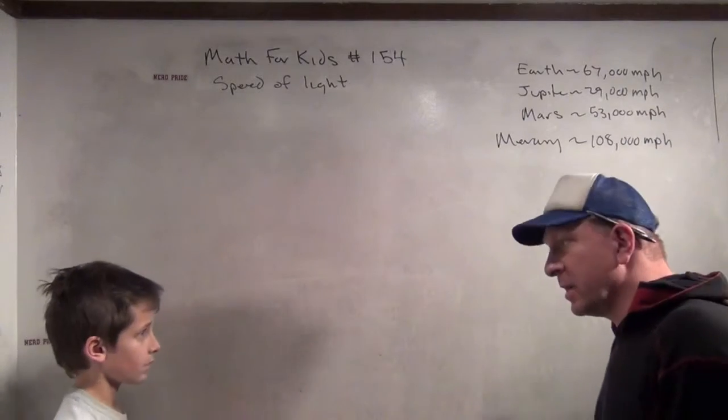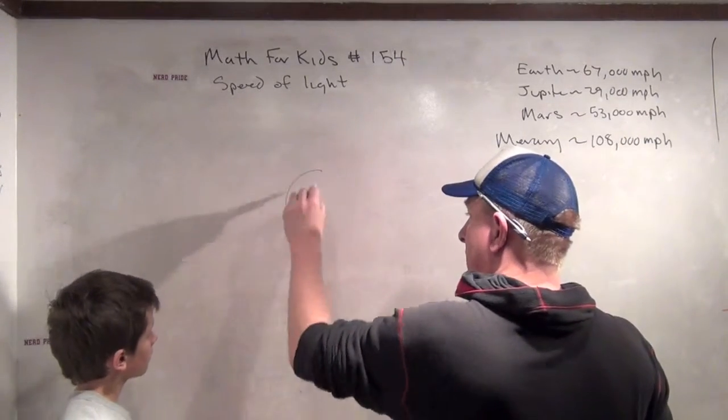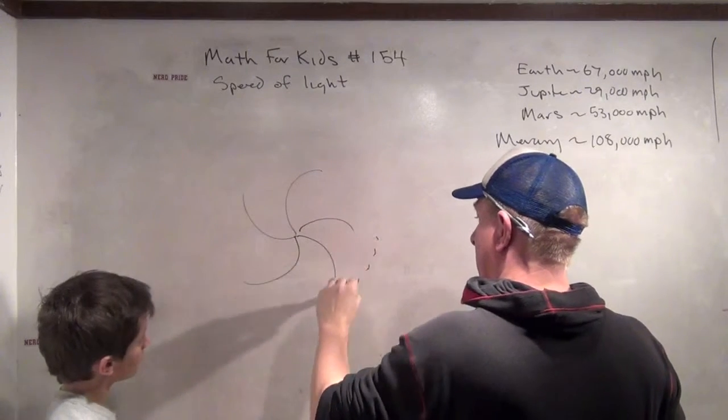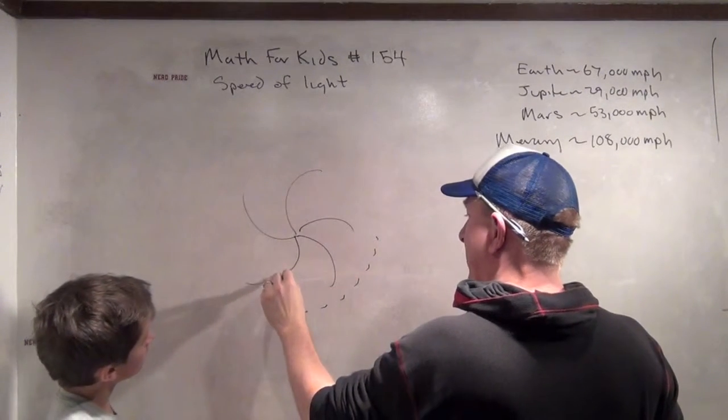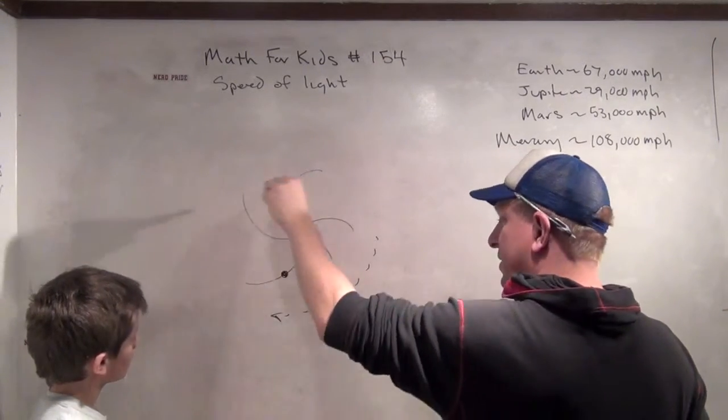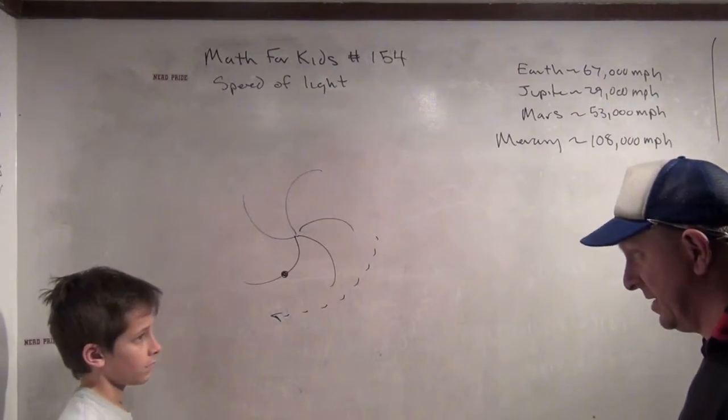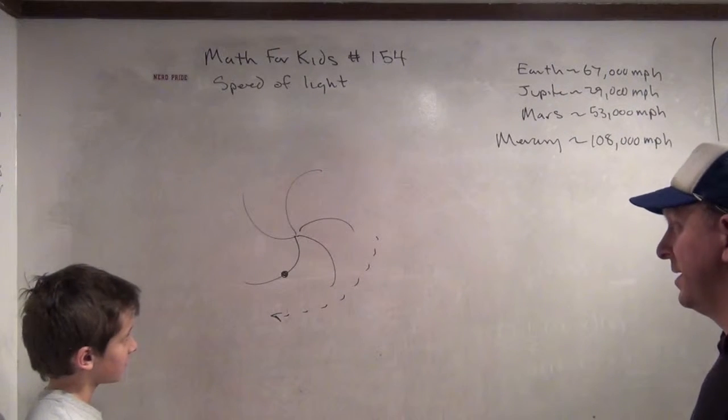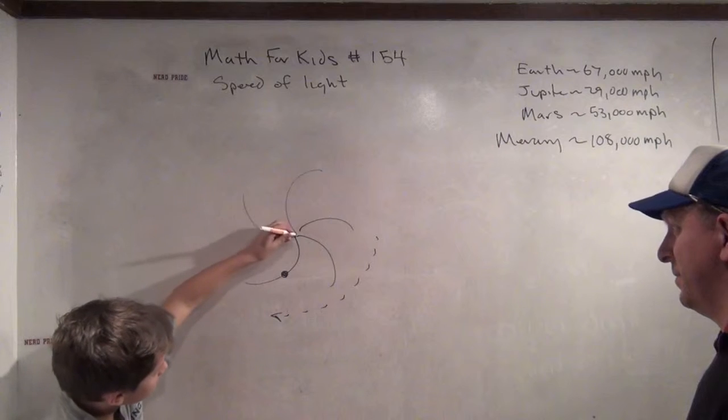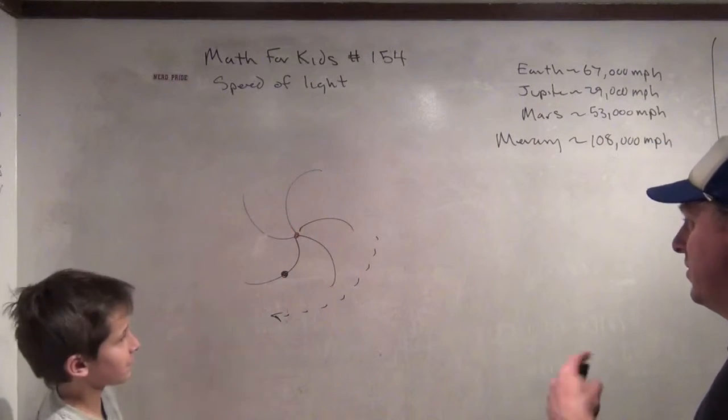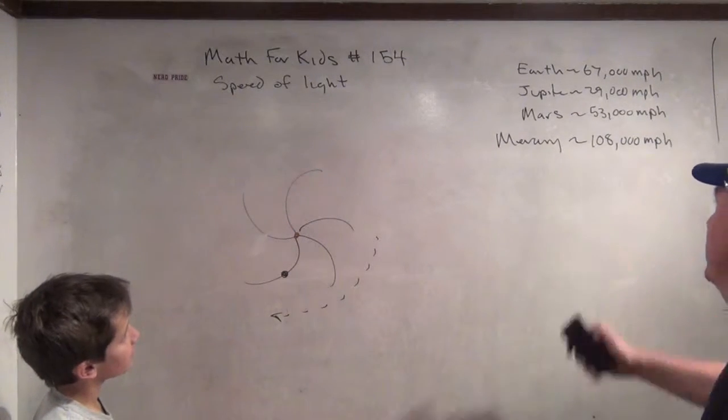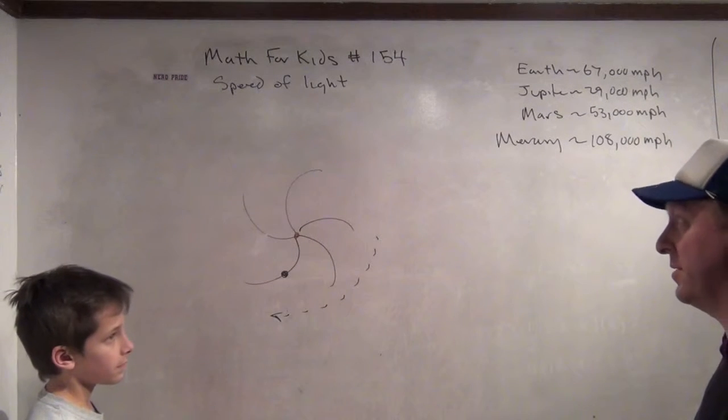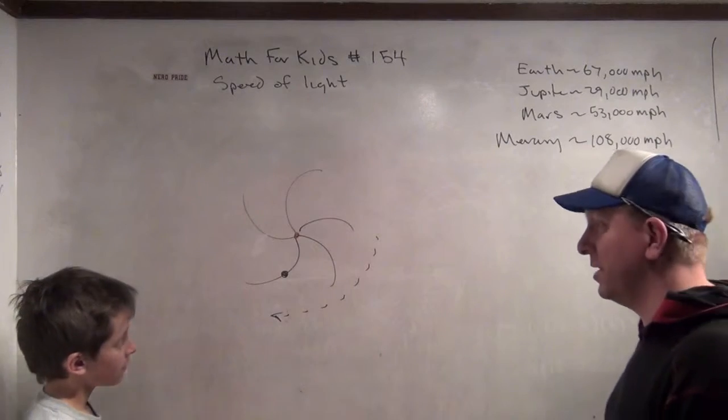The next thing we were going to calculate was how fast the sun was going around the center of the galaxy, right? Yeah. Now that is going to be really cool to do. By the way, do you think the sun's moving faster around the center of the galaxy, or do you think the planets are moving faster? The planets. Do you think the planets are moving faster around the sun? Well, we'll see. We'll see tomorrow. That'll be Math for Kids number 155.